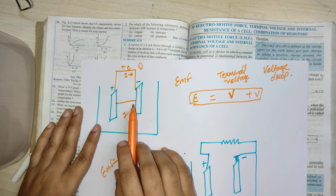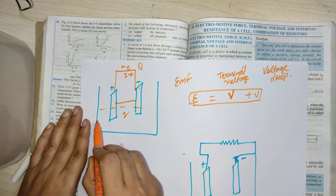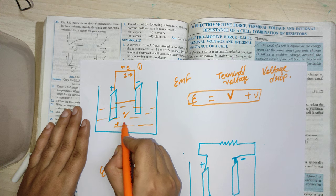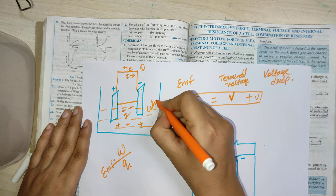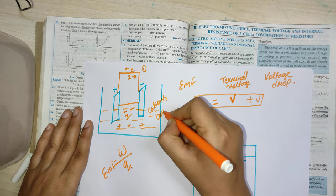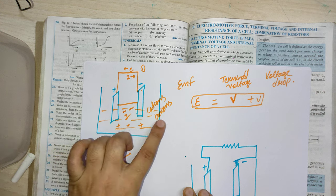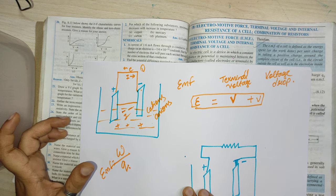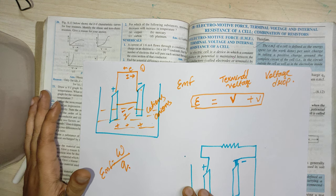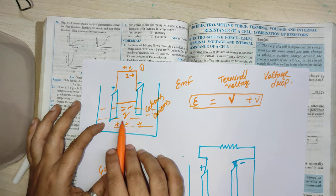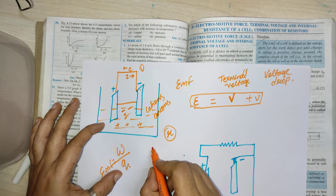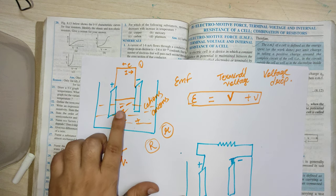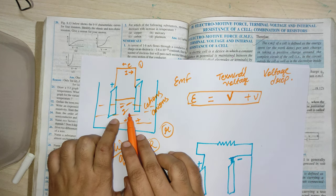Inside the cell there is an electrolyte. In this electrolyte, positive charges (cations) and negative ions (anions) are present. When these charges flow, they collide with each other and obstruct the current flow. This obstruction inside the cell is called internal resistance, represented by small r, while external resistance is represented by capital R.